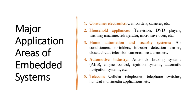The best example of consumer electronics is a digital camera. All of you might be very fond of digital cameras, but nowadays smartphones serve the purpose of digital cameras. Earlier, digital cameras were a trend — used for image capturing, storage, and display. Then you have camcorders. All these come under consumer electronics. When it comes to household appliances: televisions, DVD players, washing machines, refrigerators, microwave ovens — all these are applications of embedded systems.